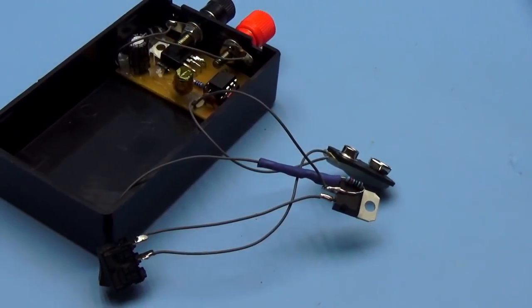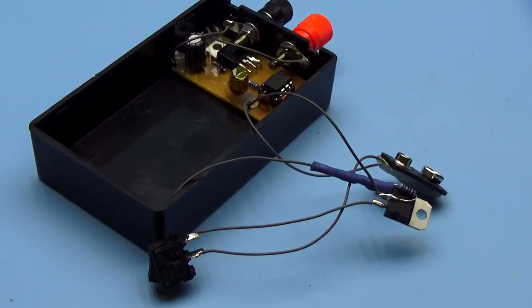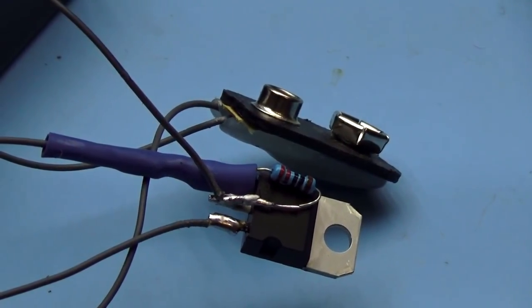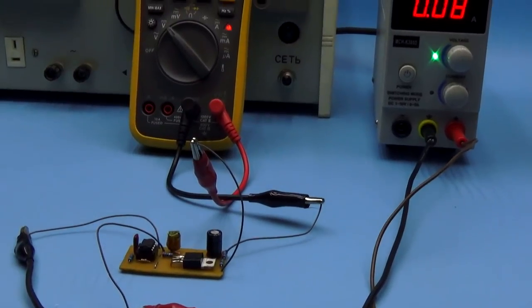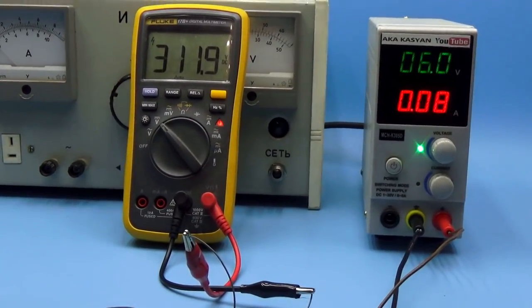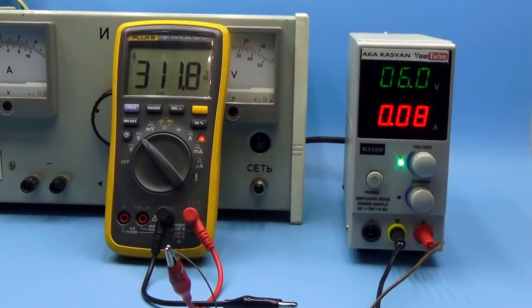I built it on LM317, but it's possible to use 7806 microcircuit. The no-load current of the converter is about 80 mA because at the output we have a load resistor.